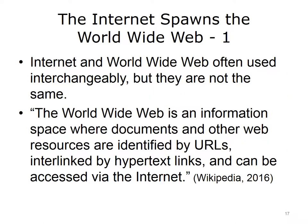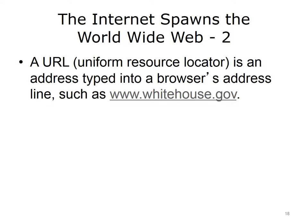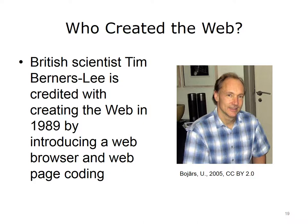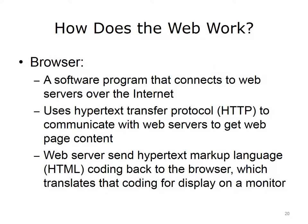The terms Internet and World Wide Web are often used interchangeably, but they are not the same thing. According to Wikipedia, the World Wide Web is an information space where documents and other web resources are identified by URLs, interlinked by hypertext links, and can be accessed via the Internet. A URL, short for Uniform Resource Locator, is an address typed into a web browser's address line, such as www.whitehouse.gov. British scientist Tim Berners-Lee is credited with creating the web in 1989 by introducing a web browser and web page coding.